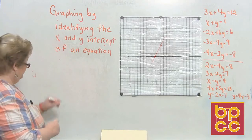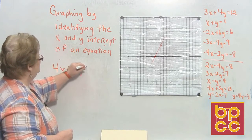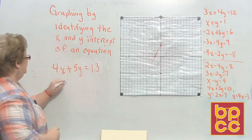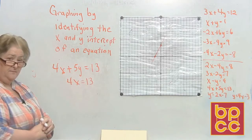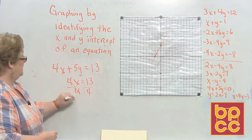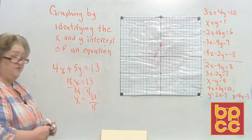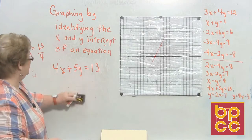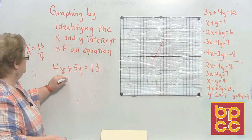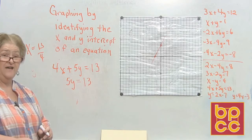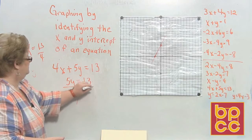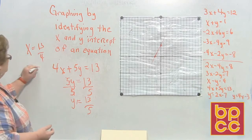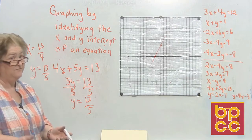Next: 4x plus 5y equals 13. Thank goodness we don't have to graph this one. Cover the y — 4x equals 13, divide by 4, so x equals 13 over 4. The x-intercept is 13 over 4. Cover the x — 5y equals 13, divide by 5, so y equals 13 over 5. The y-intercept is 13 over 5 — can't graph it, but I know where it would go.